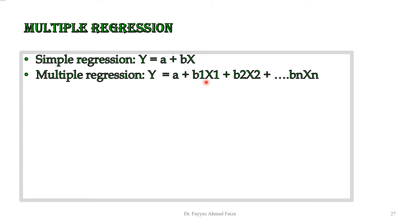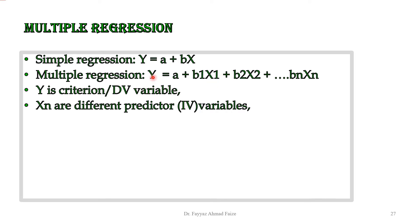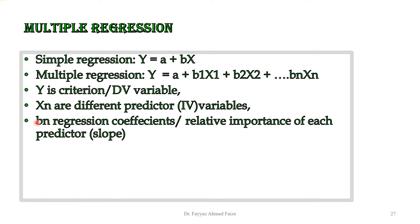Whatever predictor variables you have, you will get corresponding terms in the equation. Y is the criterion or dependent variable, because y is the value you find as a result of all these variables — when you add all of them, you arrive at y. X1, x2 are the different predictor or independent variables, and all the letters b stand for regression coefficients, forming the straight-line equation.